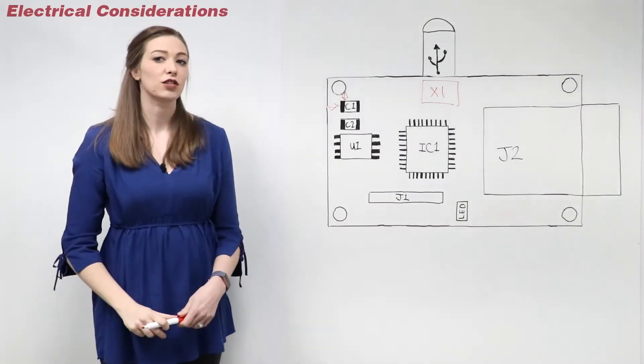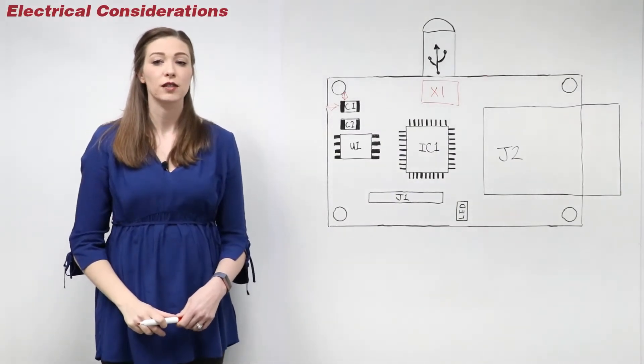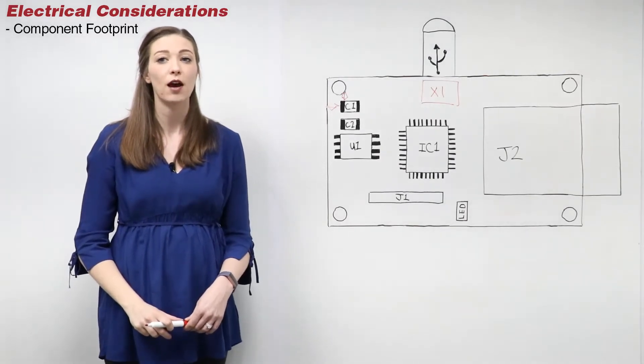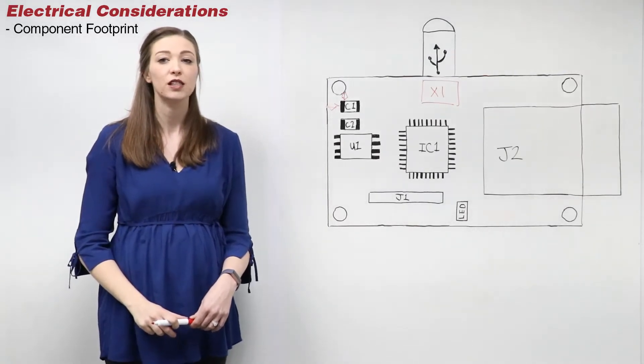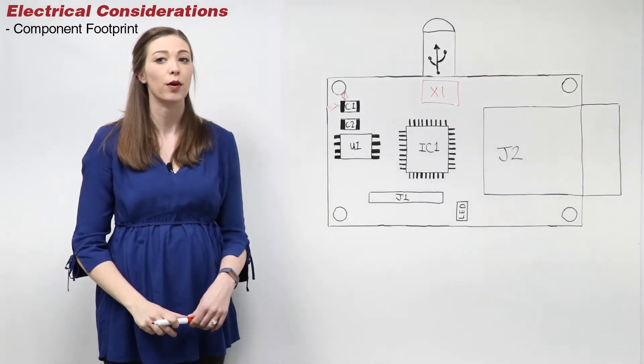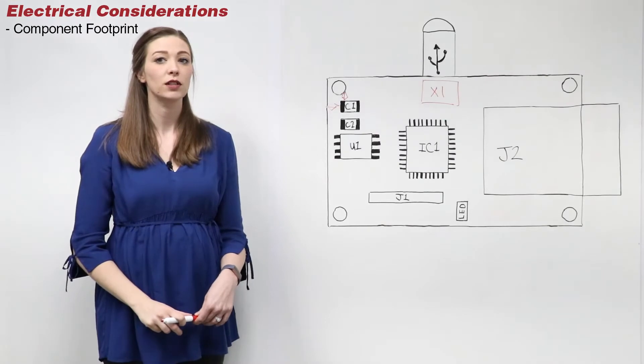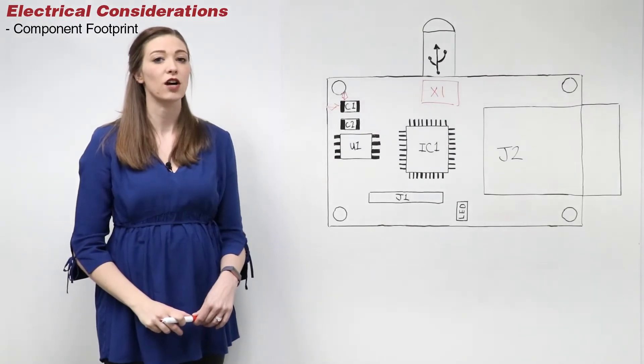Next, let's look at the electrical considerations when placing parts. Keep in mind the footprint of the components. Sometimes a component outline or body size prevents its pins from being closely located to other parts. If a close connection is required, moving the component to the secondary side of the board can resolve the issue.